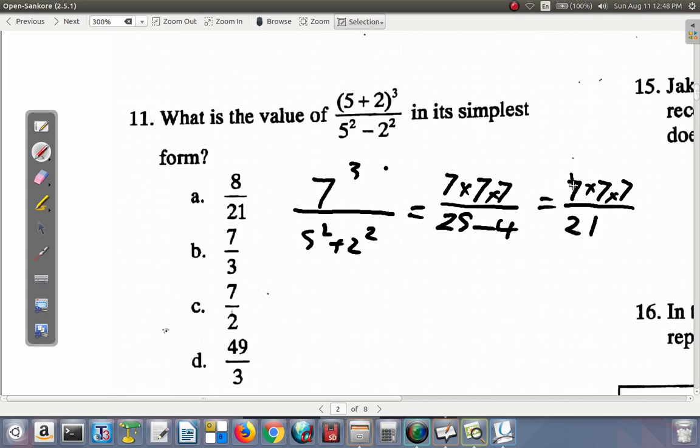Yeah, you can cancel them. 7 to 7 is 1, 7 to 21 is 3. So what you have up top is 7 times 7, 49 over 3. So it is D.